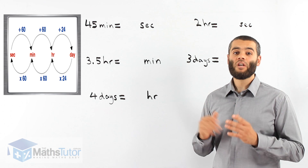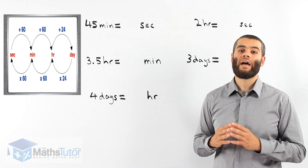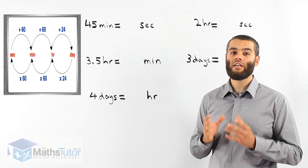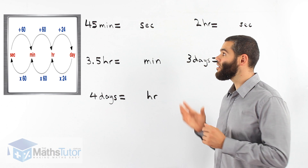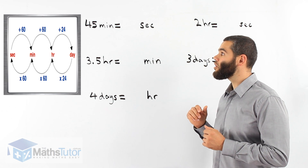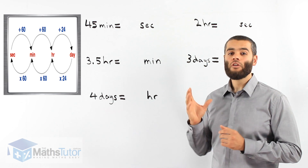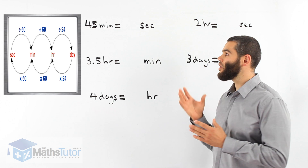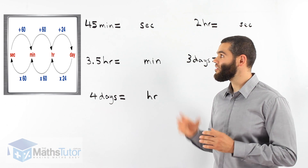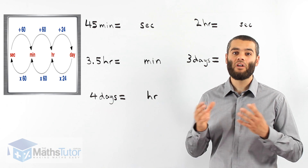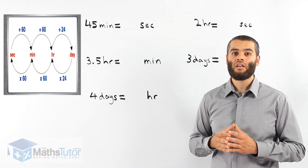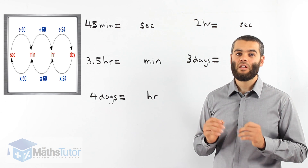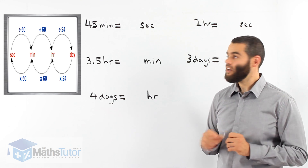If we're going from days back to hours, the opposite of divide is times. So to go from a day to an hour, we times by 24. If we're going from hours to minutes, we times by 60. And if we're going from minutes to seconds, we times by 60.